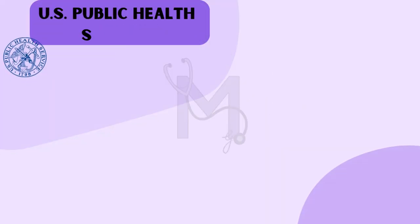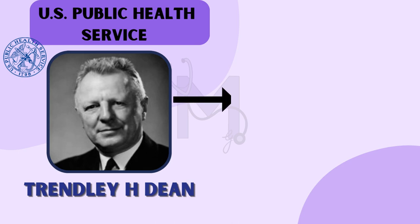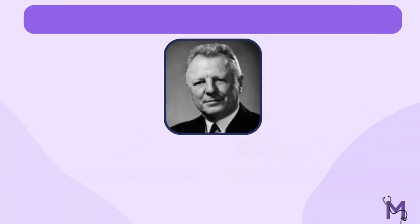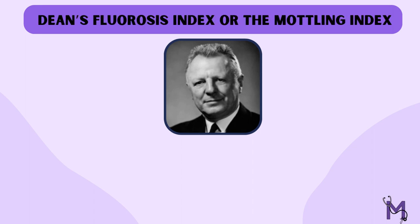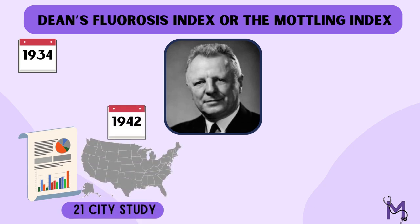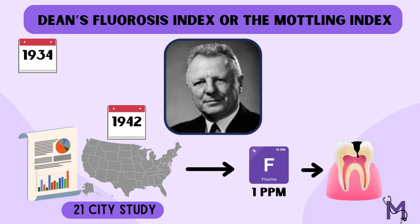The U.S. Public Health Service went on to appoint Dr. Trendley H. Dean, who then conducted the 21-city study, also known as the Shoe Leather Survey. Dean came up with the Dean's Fluorosis Index, or the Mottling Index, in the year 1934, which will be studied in detail in the upcoming videos. He also published the 21-city study in 1942, after having discovered that 1 ppm of fluoride reduces the chances of occurrence of caries by 60%.